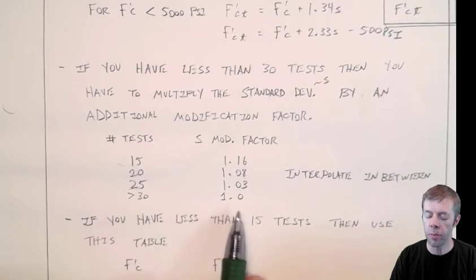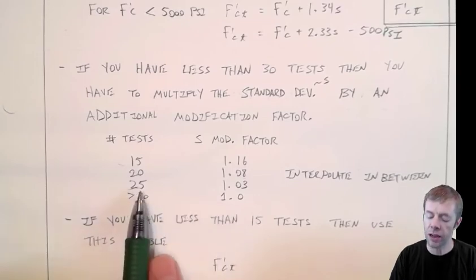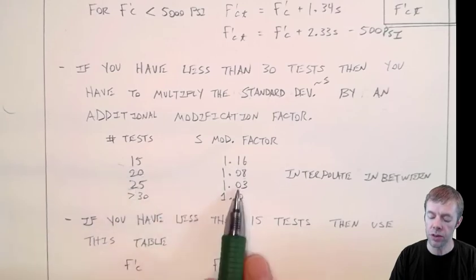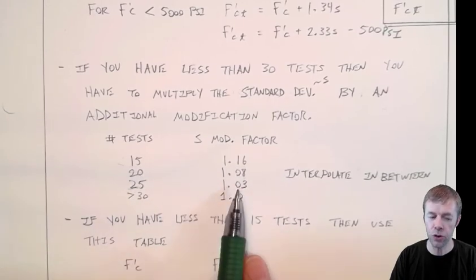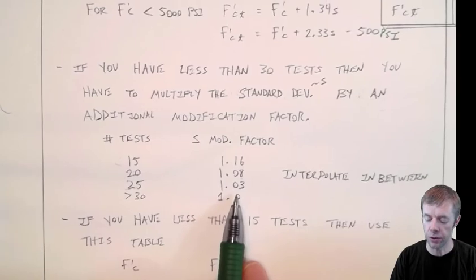If you have 30 or above, it's 1. And as you have less, notice this number goes up, and you would interpolate in between each one of these values.